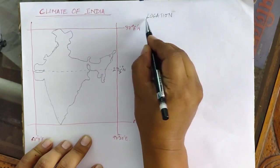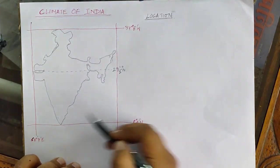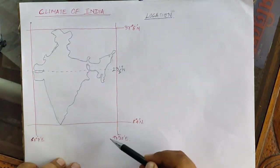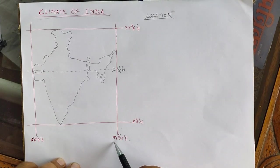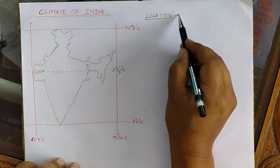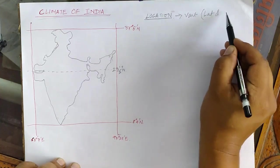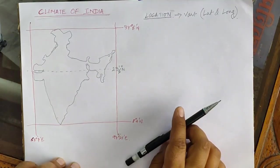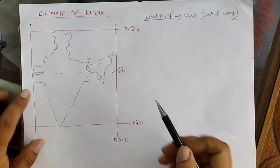The latitude and longitudinal extent also plays an equally important role. As you can see, the extent of our country is very vast, extending from 68 degrees 7 minutes east to 97 degrees 25 minutes east in longitude, and from 8 degrees 4 minutes north to 37 degrees 6 minutes north in latitude, which makes the country the seventh largest in the world.